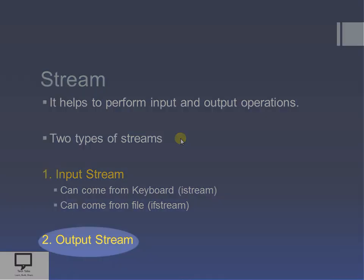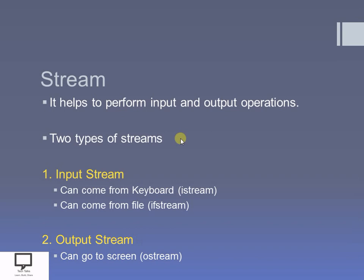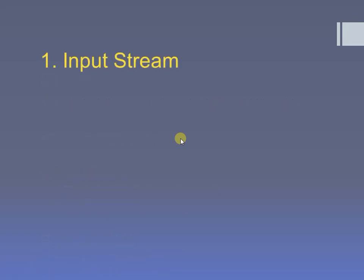The other type is output stream. The output goes to the screen using ostream, and the output can also go to the file using ofstream.